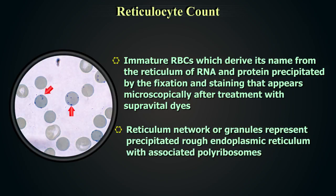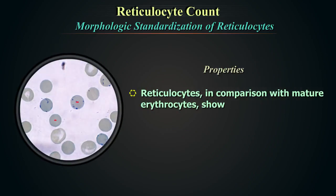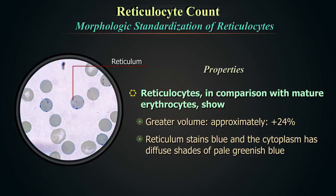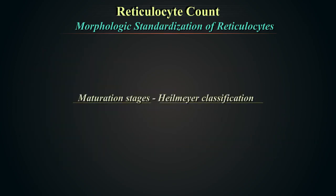The reticulum network or granules represent precipitated rough endoplasmic reticulum with associated polyribosomes. Reticulocytes show greater volume than mature erythrocytes by approximately 24%. The reticulum stains blue and the cytoplasm has diffuse shades of pale greenish blue.